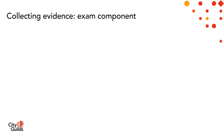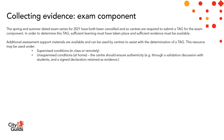When collecting evidence for the exam component, the spring and summer dated exam series for 2021 have both been cancelled, so centres are required to submit a TAG for the exam component. To determine this TAG, sufficient learning must have taken place and sufficient evidence must be available. Additional assessment support materials are available on the website and can be used under supervised conditions in class, remotely, or in unsupervised conditions at home. The centre must ensure authenticity — for example, through a validation discussion with students — and a signed declaration needs to be retained as evidence.